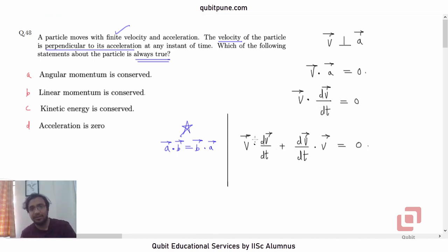So both the properties have been used simultaneously. Now this calls for the product rule of differentiation, which also works very well in vector functions. So we can now write therefore, d by dt of V bar dot V bar is zero.